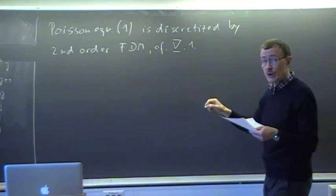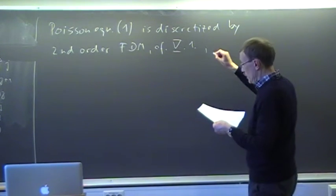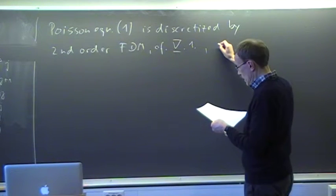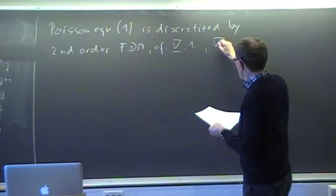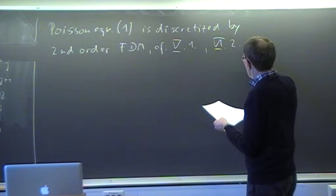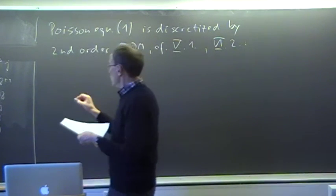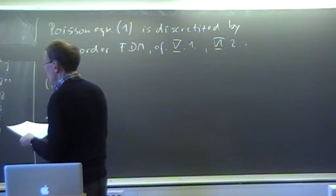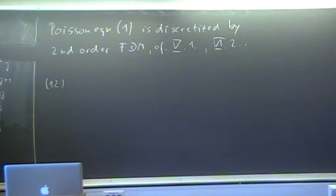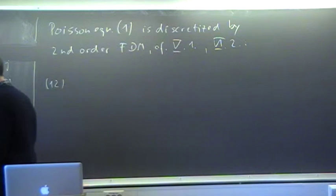We also discussed this when we did the u_xx in the heat equation, that was in section 6.2. So if we are to discretize the second derivative of u in x plus the second derivative of u in y at grid point (x_i, y_j), we get the following.